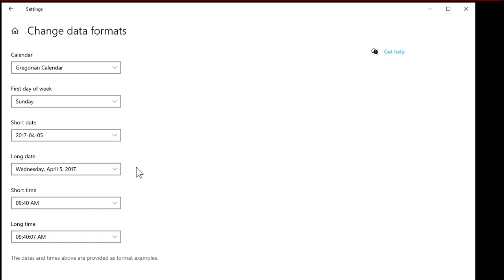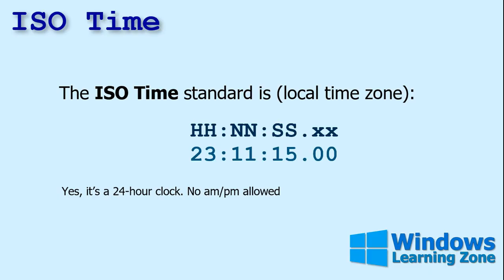The ISO standard also includes times. If you want to change your time format it's hour-minute-seconds, and then fractions of a second if you want. I use 'N' to represent minutes because in Microsoft Access, N is for minute in the format string and M is for month. And yes, this is a 24-hour clock — there's no AM and PM in the ISO standard. If you're familiar with military time, 2300 hours for example is 11 o'clock PM.